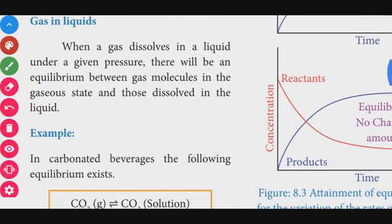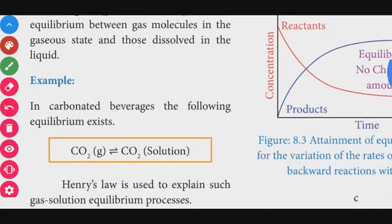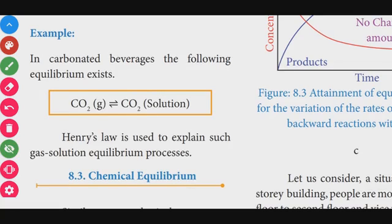For gases in liquids: when a gas dissolves in a liquid at a given pressure, there will be an equilibrium between the gas molecules in the gaseous state and those dissolved in the liquid. An example of this is carbonated beverages, which are composed of carbon dioxide dissolved under pressure. Any equilibrium attainment between the gas phase and the solution phase applies here.